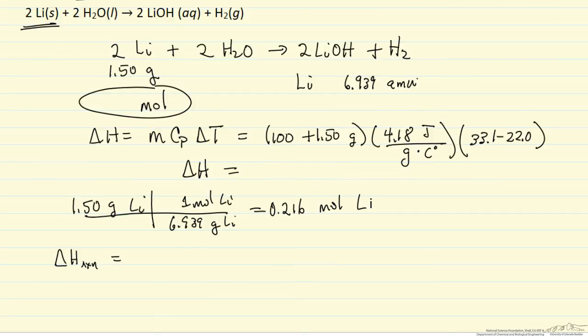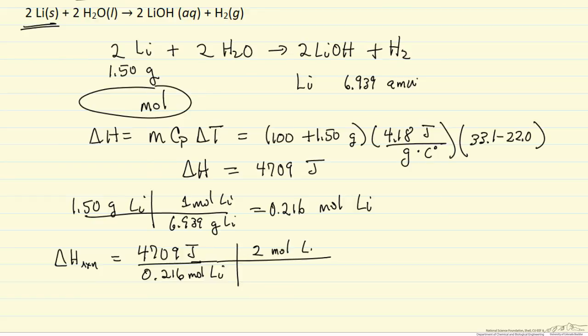Let's calculate this value of delta H for the 1.5 grams. So we have 4709 joules for the 1.5 grams which means for 0.216 moles of lithium. And then we want to multiply this by 2 moles of lithium because our reaction has 2 moles of lithium and we want the heat of reaction for the reaction as written.